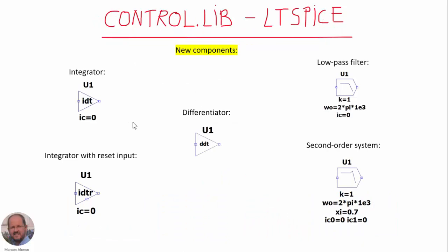These are the components that we are going to implement today. We have first the integrator implemented with the LTSpice built-in function IDT. Then we are going to implement an integrator with a reset input. We will implement then a differentiator using the LTSpice built-in function DDT. And then using these components, we will show how to implement a low pass filter, and finally a second order system.